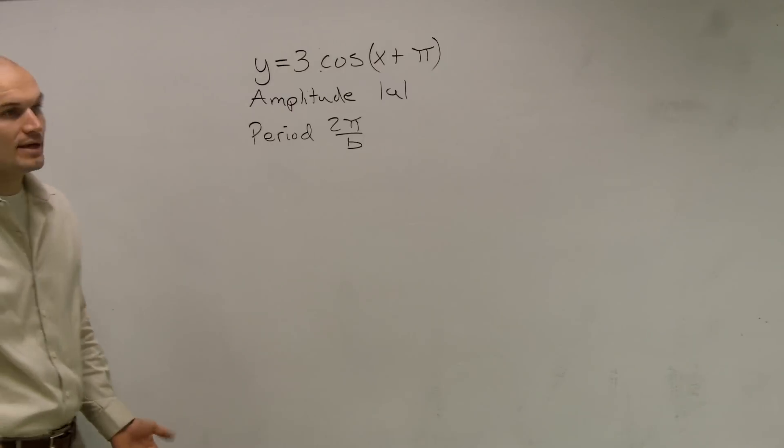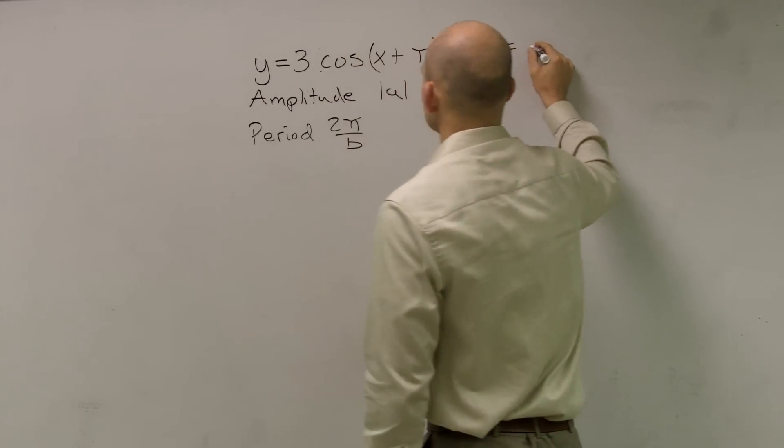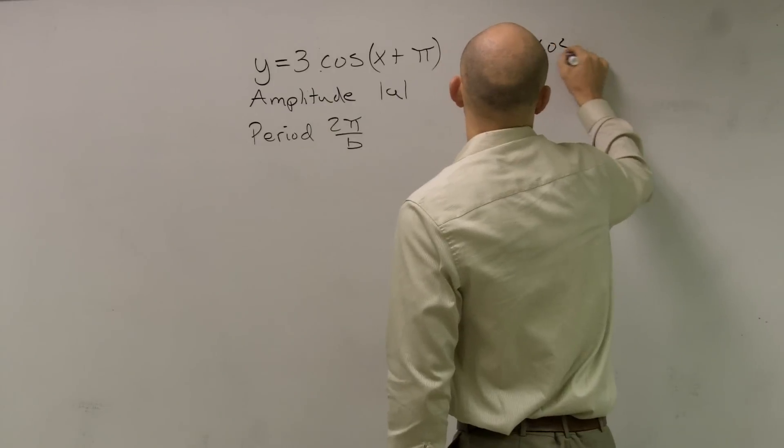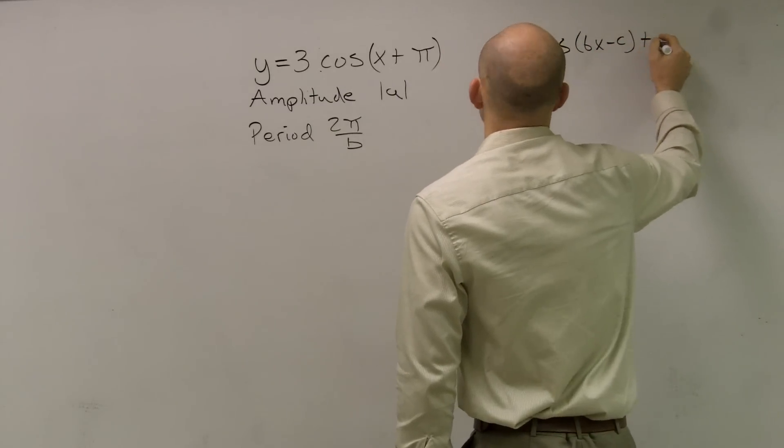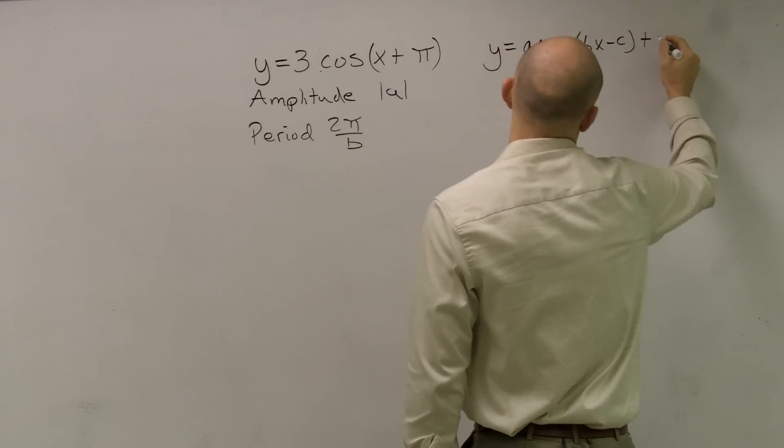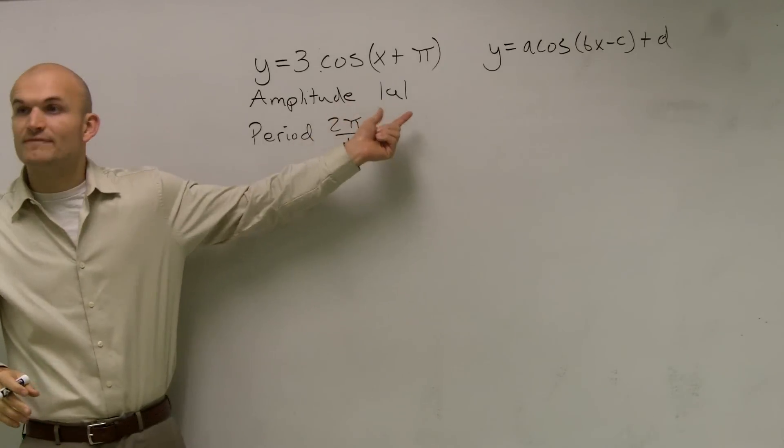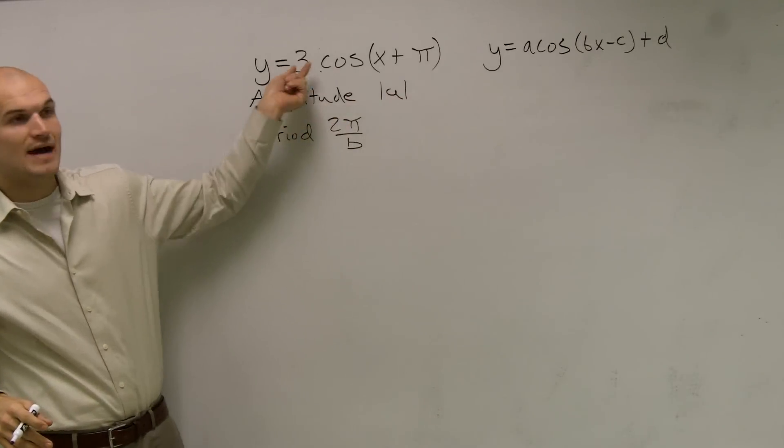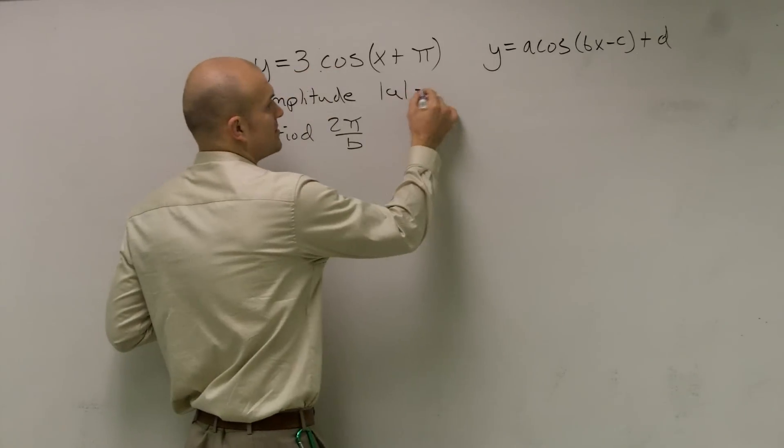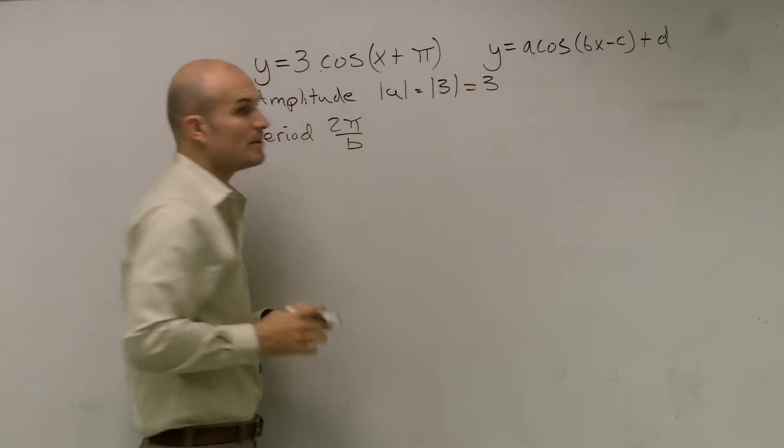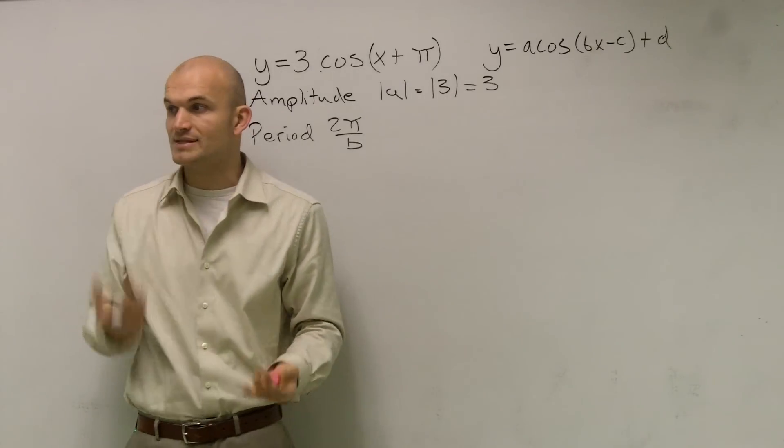Now, if you forget what your amplitude and period or what your A and B are, you have to remember our general form, which is A cosine of Bx minus C plus D. When I'm talking about the amplitude, I want to find the absolute value of A. You can see A is the number in front of cosine, so that's the absolute value of 3, which is 3. The amplitude tells us how high and how low our graph is going to go from the x-axis.